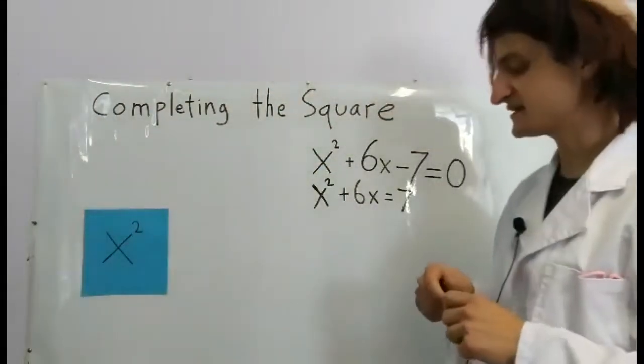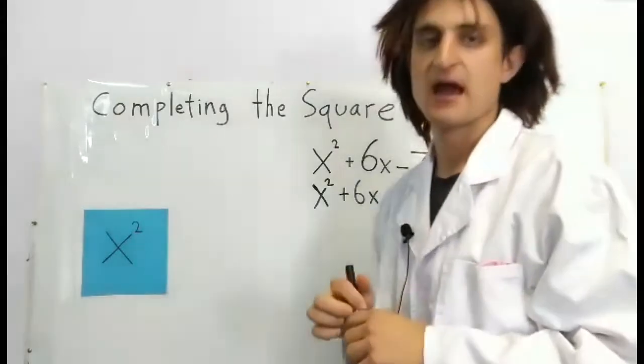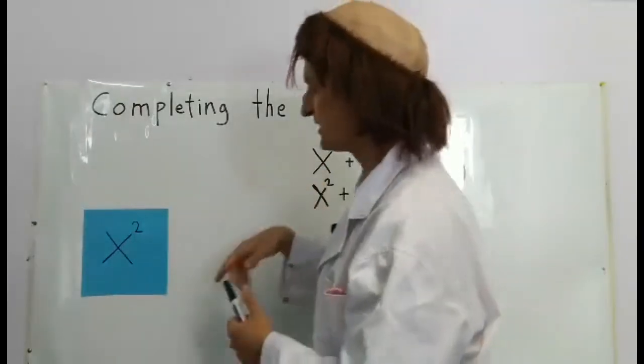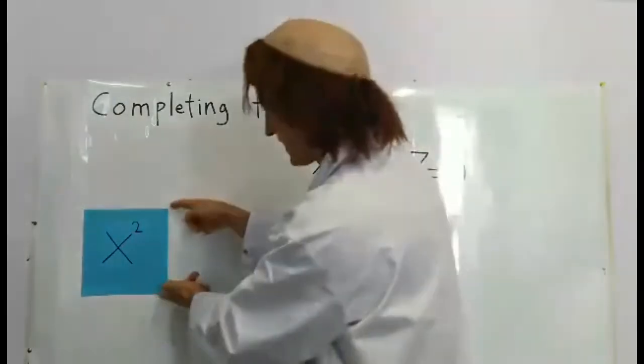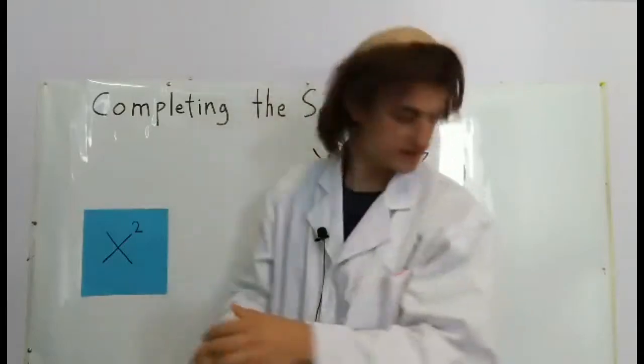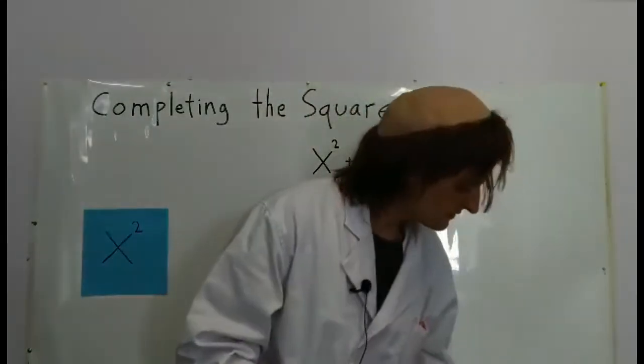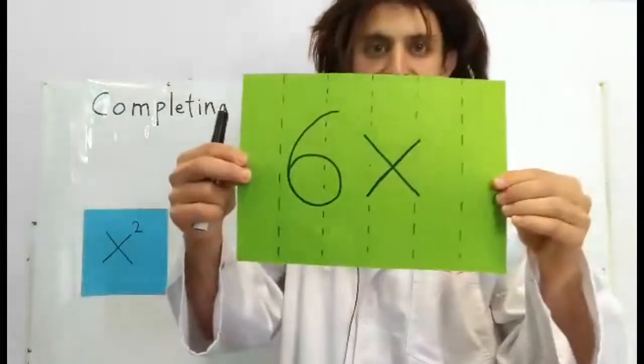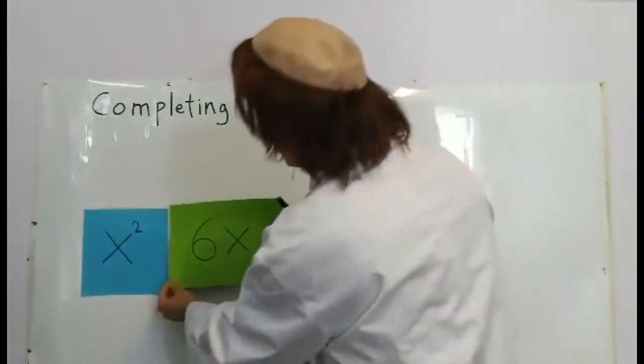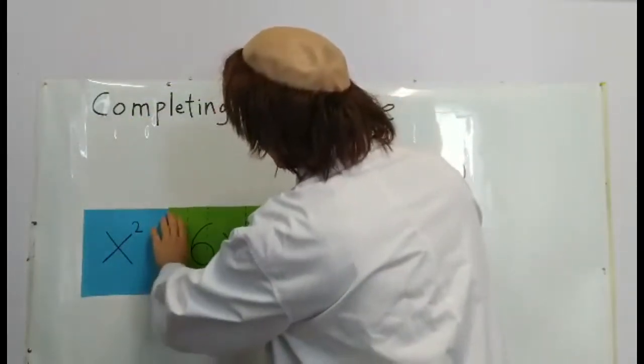What does 6x look like? I imagine it's a rectangle with height x and length 6, just like this. We can put it right here.